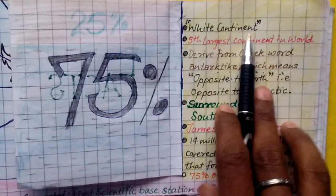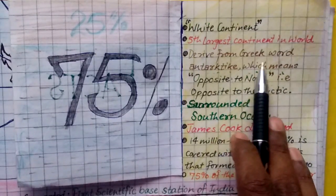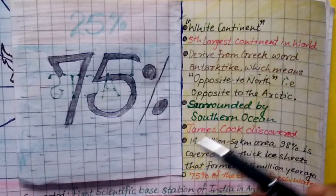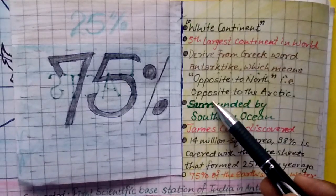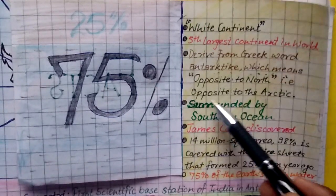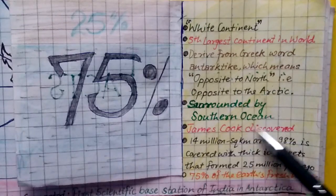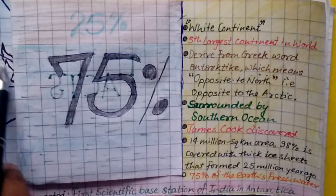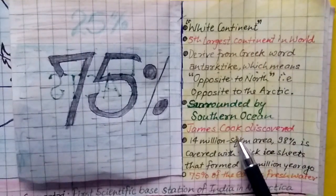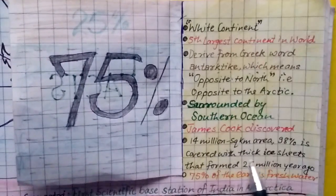Antarctic is known as the white continent and is the fifth largest continent in the world. It is derived from the Greek word 'antarctic,' which means opposite to the north — since it is at the south pole, opposite to the Arctic. It is surrounded by the Southern Ocean, and James Cook is the person who first discovered it. It covers a 14 million square kilometer area.